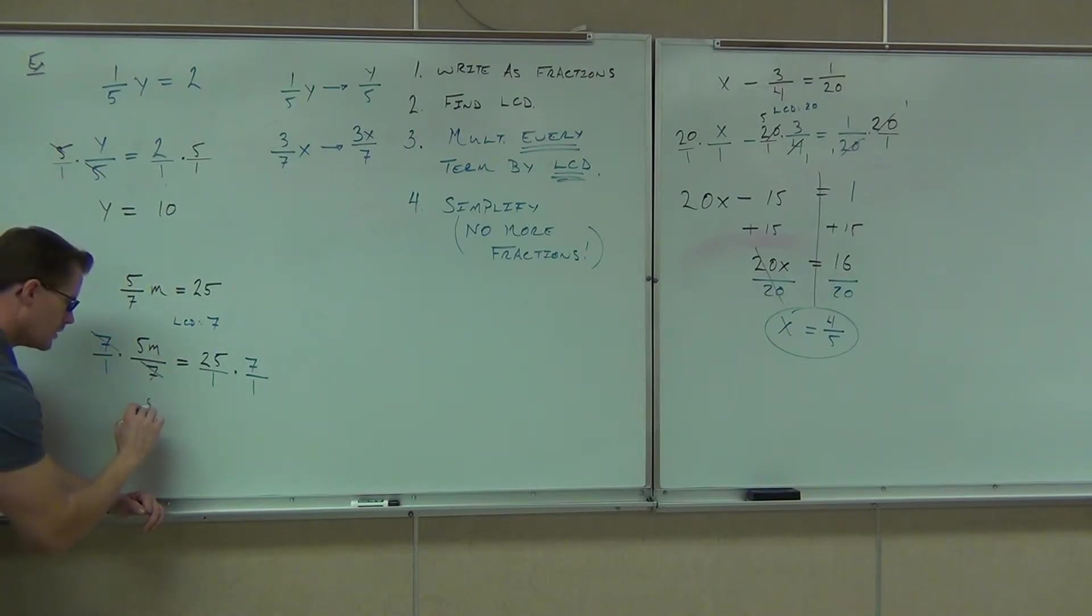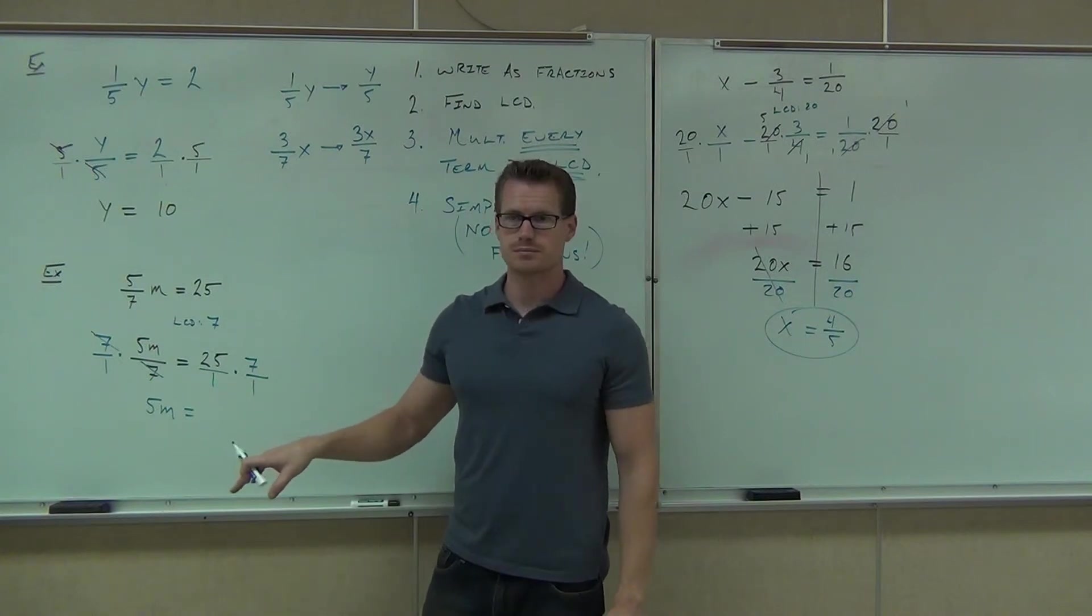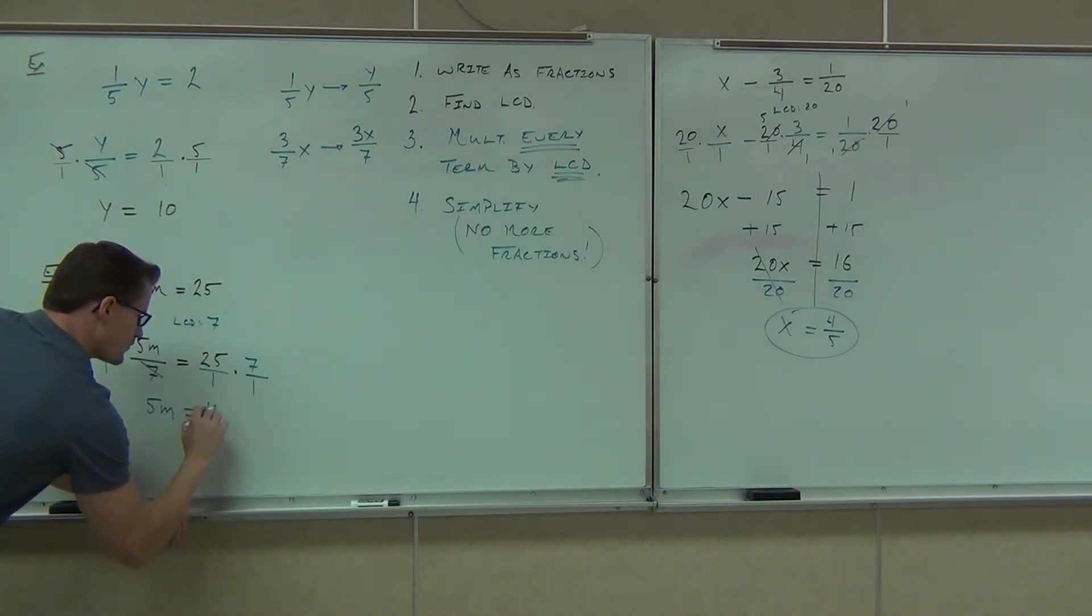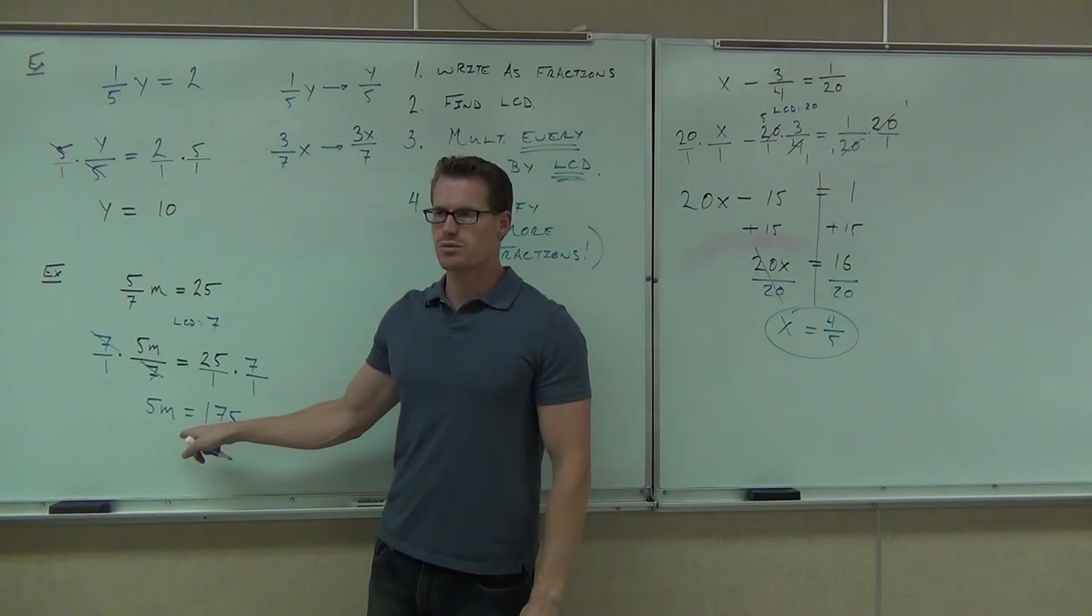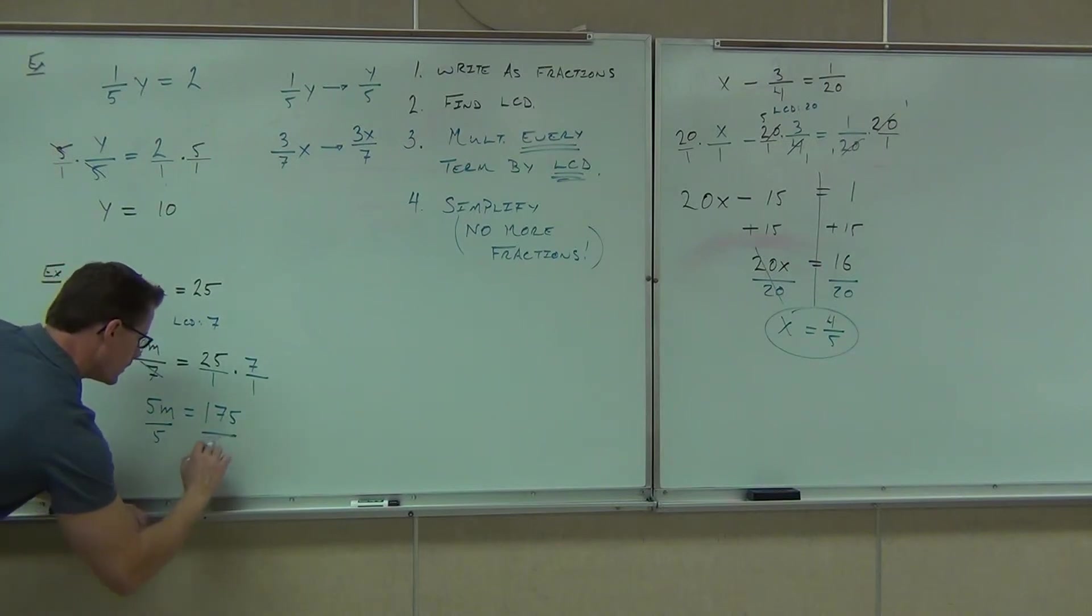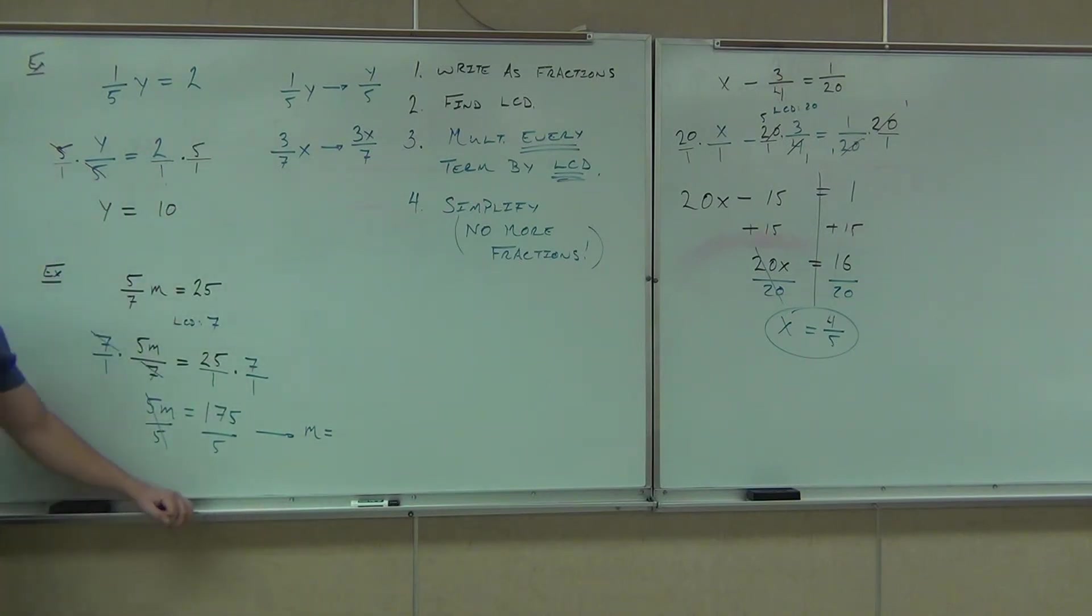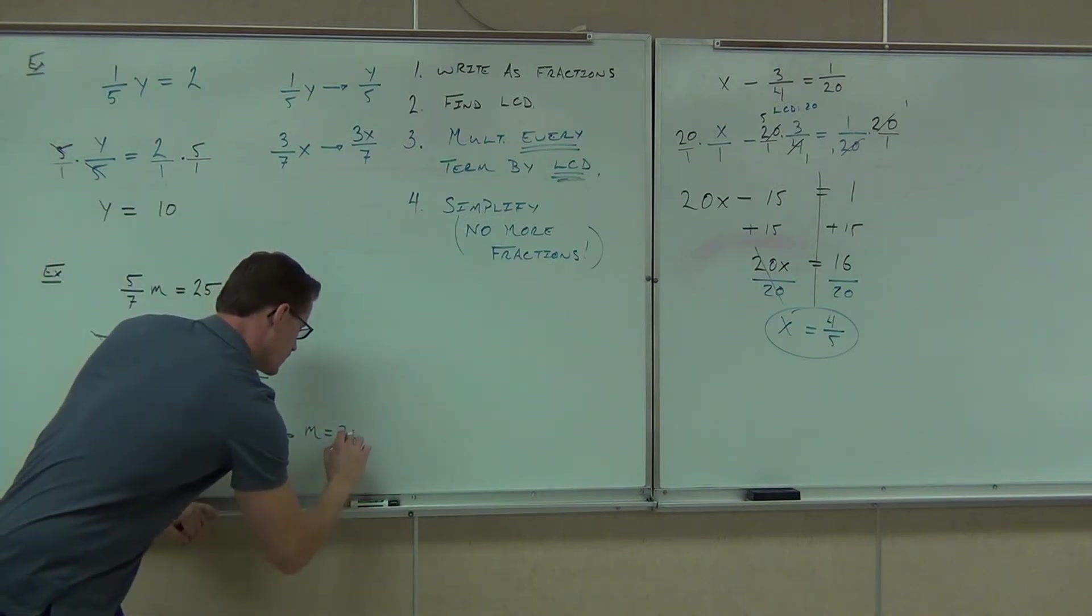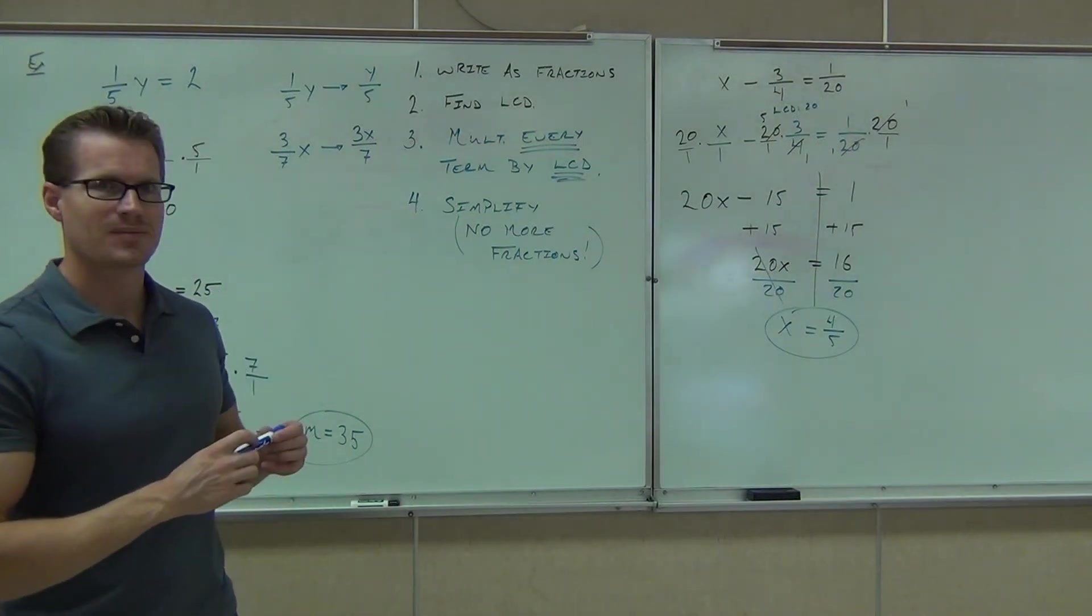On the right-hand side, how much are we going to get with 25 over one times seven over one? What's that give you? 175 over one. So, if it's 175 over one, I'm just going to leave it 175. Hey, can you do that problem? Sure. Sure. What do you have to do to solve that problem? Divide by five. Divide by five. If you divide 175 by five, you are going to get 35. Yep, 35.